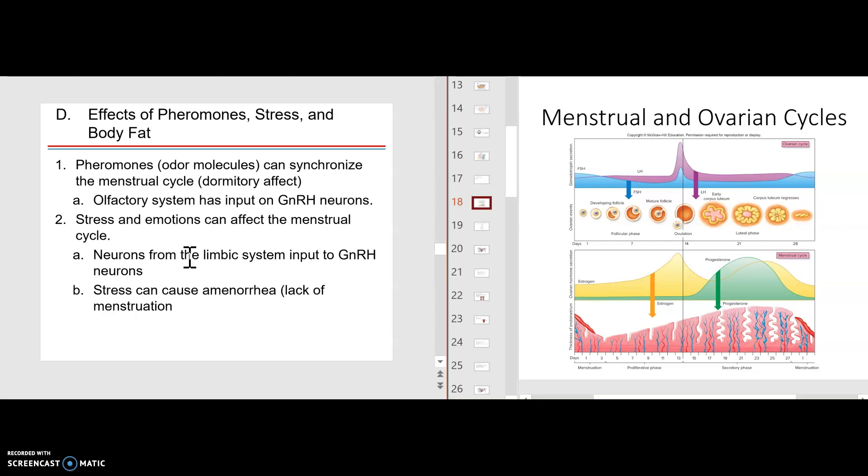The olfactory system, the smell system, has input to the hypothalamus for the gonadotrophin-releasing hormones. Stress and emotions can affect the menstrual cycle. Stress can cause the woman to stop having menstrual periods.